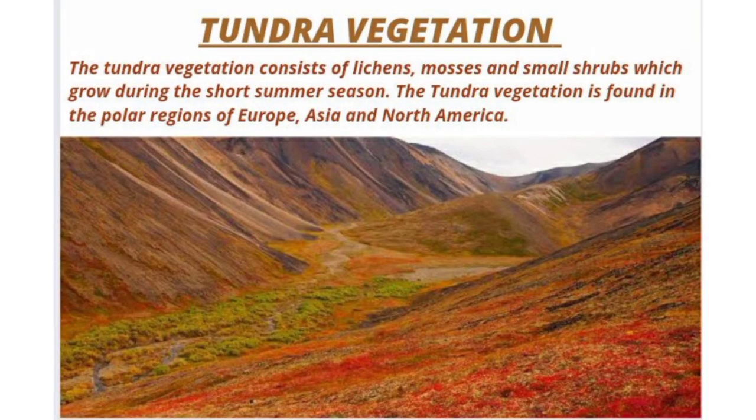Tundra vegetation. The tundra vegetation consists of lichens, mosses and small shrubs, which grow during the short summer season. The tundra vegetation is found in the polar regions of Europe, Asia and North America.